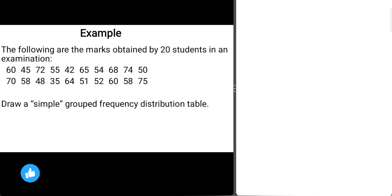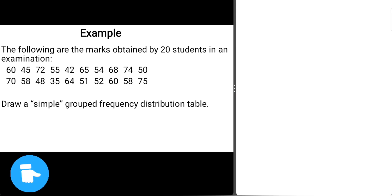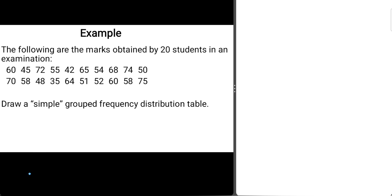The question is: draw a simple grouped frequency distribution table. So how do you go about drawing this frequency distribution table for a group of data? First of all, before you can draw a simple grouped frequency distribution table, you must first know your class limit or class interval, because that will help you to know the number of frequencies that will fall within a particular class interval.